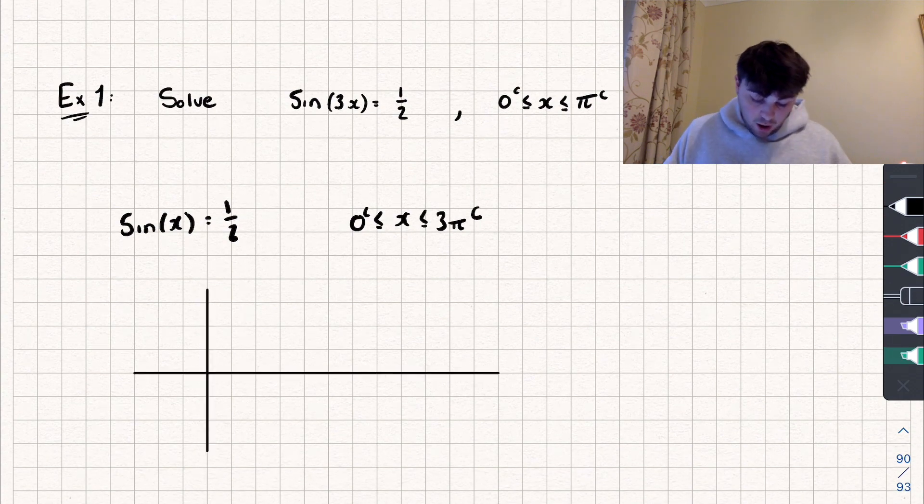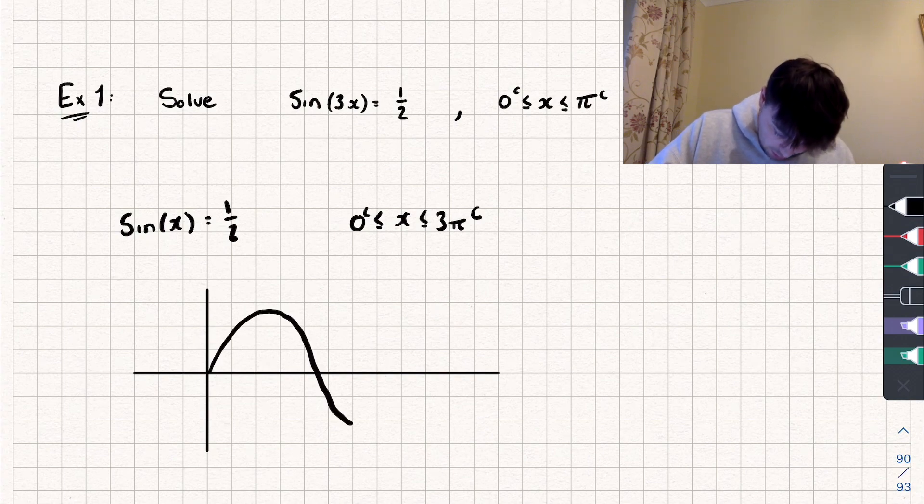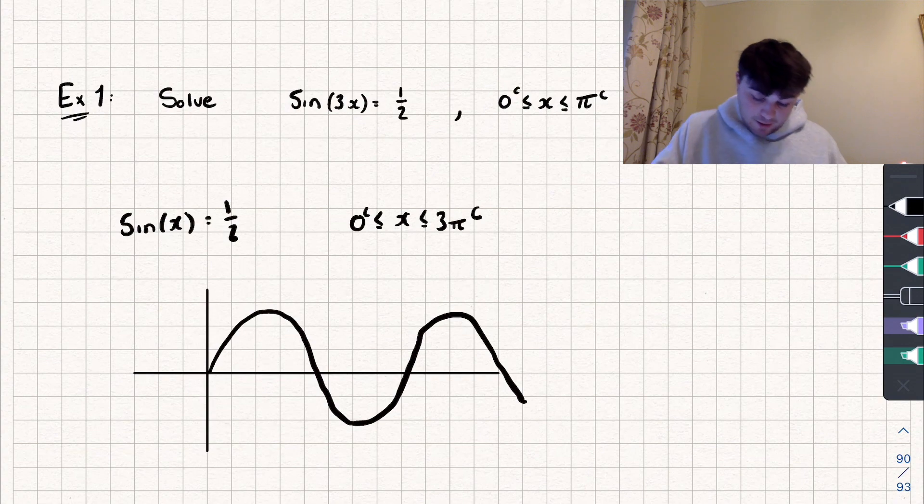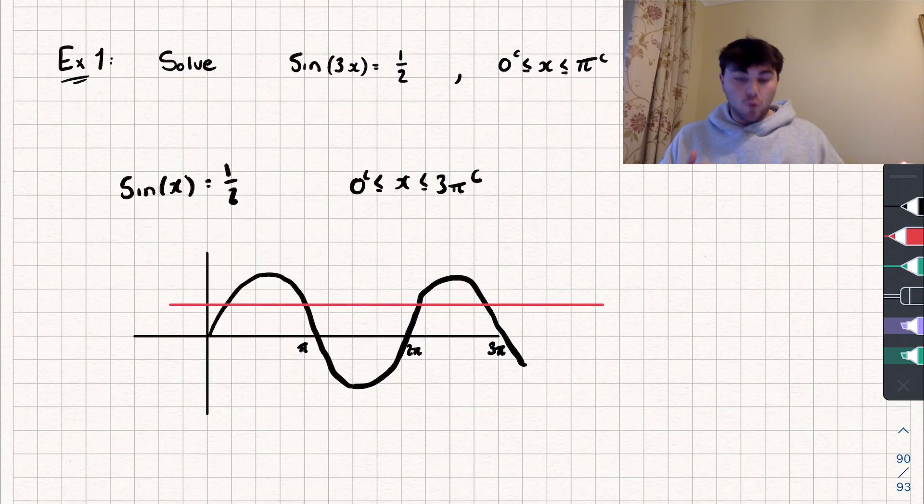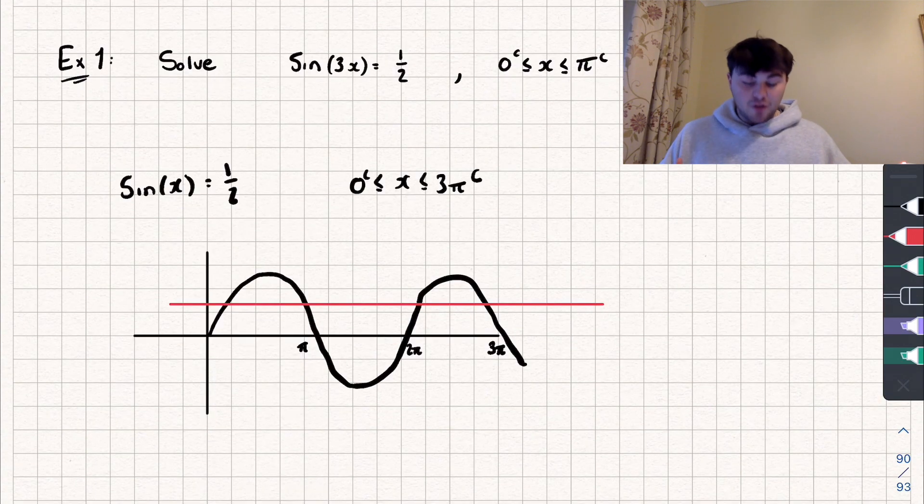So let me draw the sketch of that graph. So we've got our sine wave, so it's going to look something sort of like that, doesn't have to be perfect. And we've got pi radians, 2 pi radians, and 3 pi radians. And we're looking to solve when this is equal to 1 half, so that's on this line here. And so you can see we're going to have four solutions.